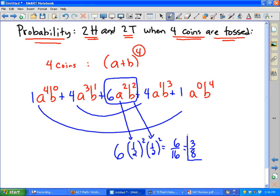So the probability of getting two heads and two tails is three-eighths. And you could do the same thing for the rest of them. This would be four out of 16, and this would be four out of 16. This one was six out of 16. And this would be one out of 16, and this is one out of 16. And if you add those together—one-sixteenth, four-sixteenths, six-sixteenths, another four-sixteenths, another one-sixteenth—you get sixteen-sixteenths, which is 100%.